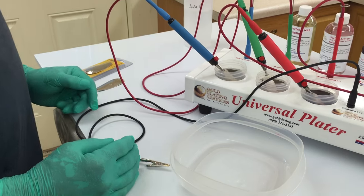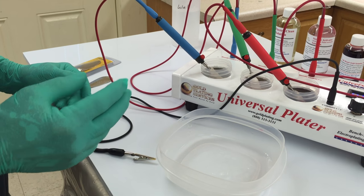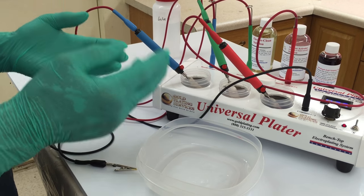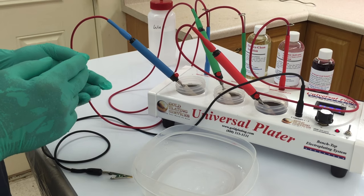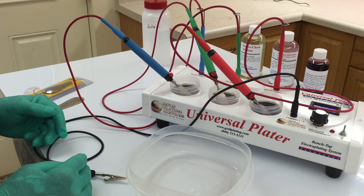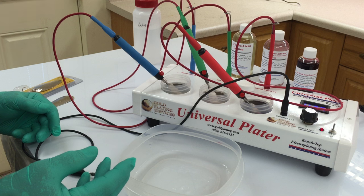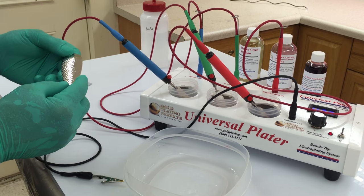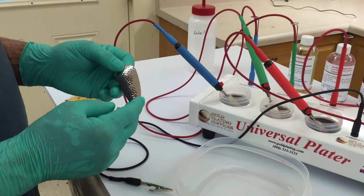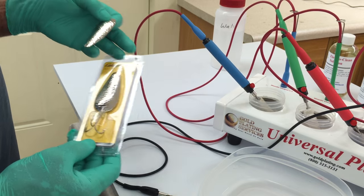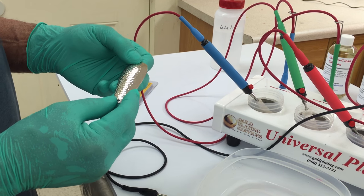The universal plater is one of our very popular machines because it will plate with gold, nickel, and copper. To demonstrate the basic operation, I'm going to gold plate one side of this nickel plated fishing lure. I took it right out of the pack. The only thing I've done is remove the hook.